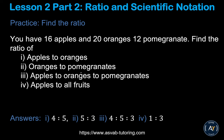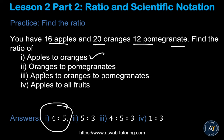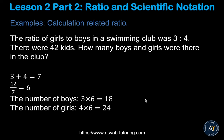Here's a practice example you can try yourself. You have 16 apples, 20 oranges, and 12 pomegranates. Find the following ratios: apples to oranges is 4 ratio 5; oranges to pomegranates is 5 ratio 3; and apples to oranges to all fruits is 1 ratio 3. Try it by yourself and you'll understand it.